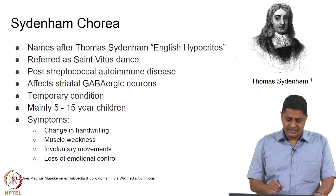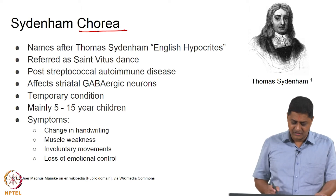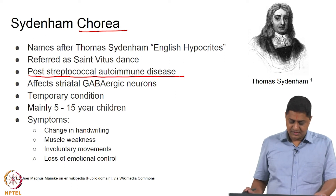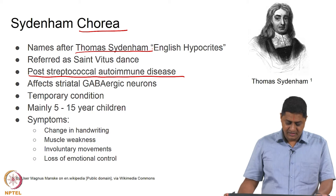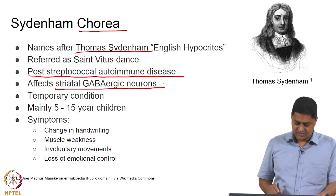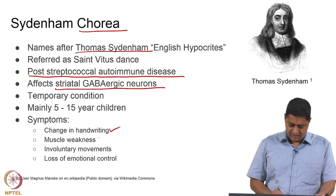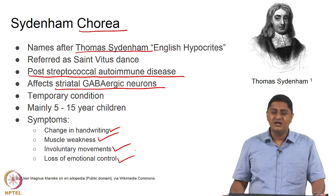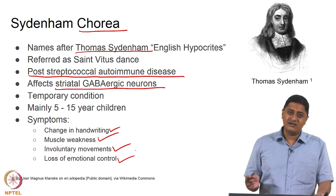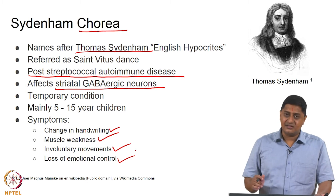Another disease is Sydenham's chorea, named after Thomas Sydenham — dance-like movements that occur as an after-effect of rheumatic fever or post-streptococcal autoimmune disease. Fortunately, it is a relatively temporary condition. It affects striatal GABAergic neurons and happens between the ages of 5 and 15 years. Symptoms include changes in handwriting, muscle weakness, involuntary movements, and frequently, loss of emotional control. These occur after the person survives the streptococcal disease.